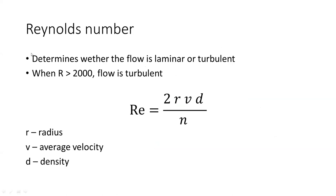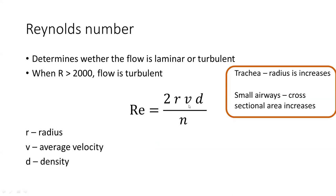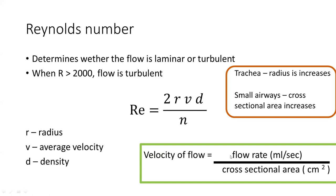Reynolds number is important here: when Reynolds number is beyond 2000, flow is turbulent. Reynolds number is directly proportional to radius, average velocity, and gas density. In the trachea, the large radius and high velocity push the Reynolds number above 2000, making flow turbulent. In the small airways, the collective cross-sectional area increases progressively, which — being inversely proportional to velocity — reduces velocity. The resulting low Reynolds number means flow does not become turbulent in the smaller airways.